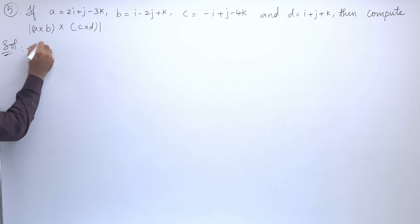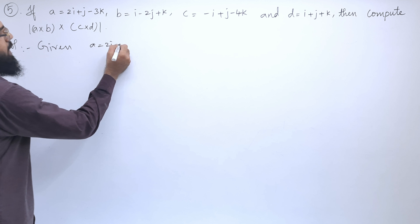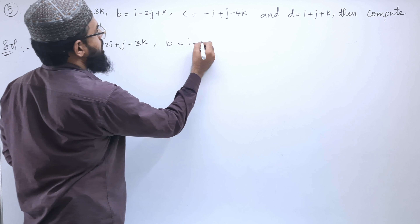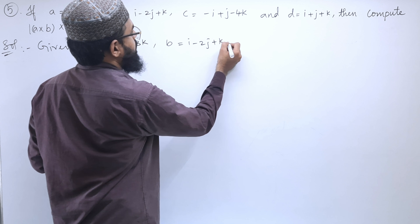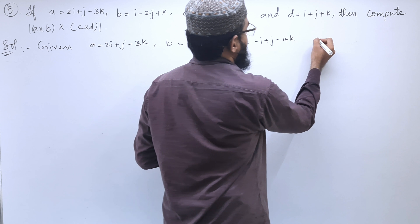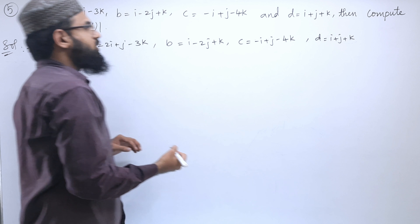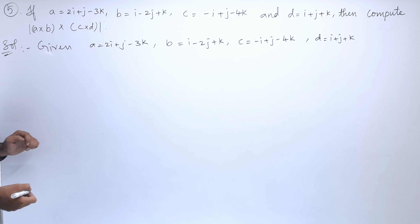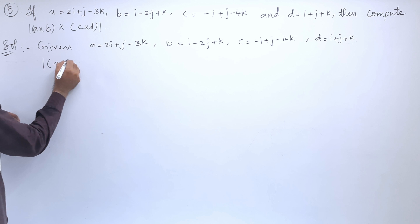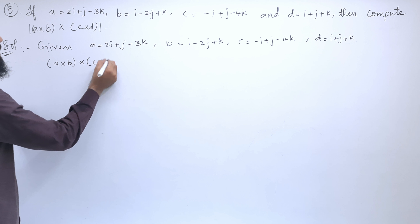In the solution, let us write the given vectors: A equals 2i + j − 3k, B equals i − 2j + k, C equals −i + j − 4k, and D equals i + j + k. These are the four vectors. Next, we will find out A cross B cross C cross D using the known formula.